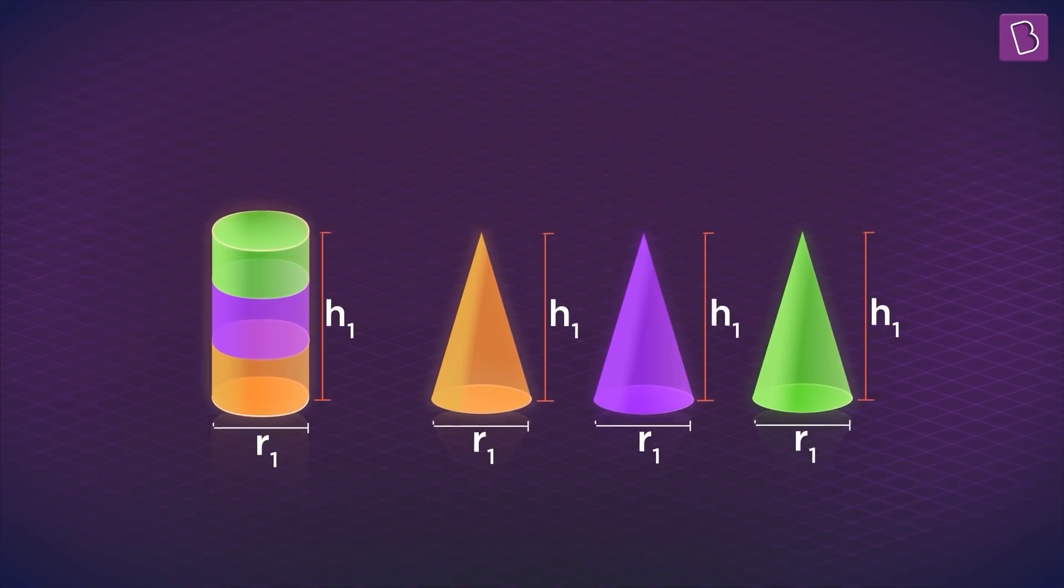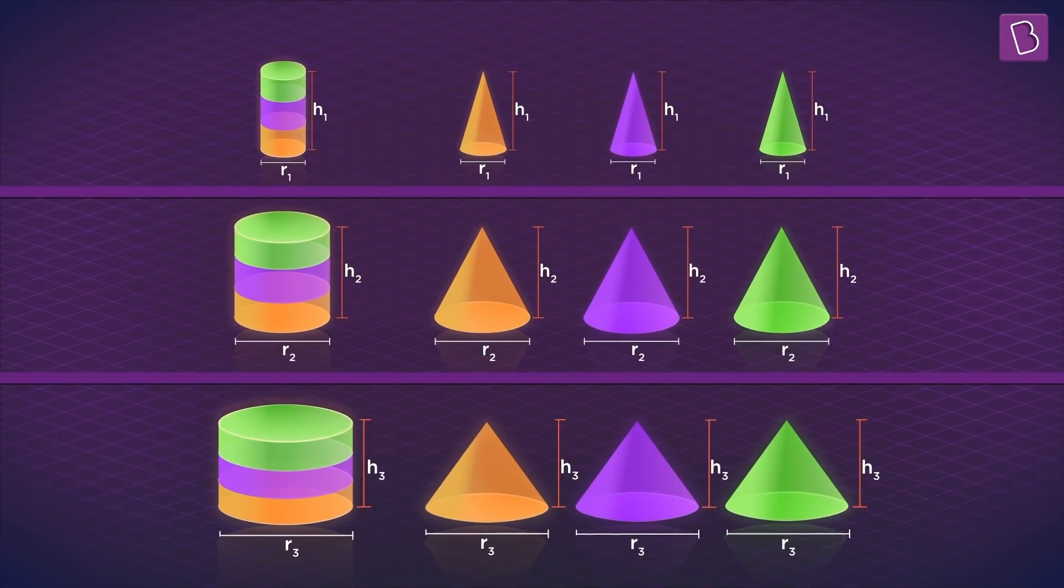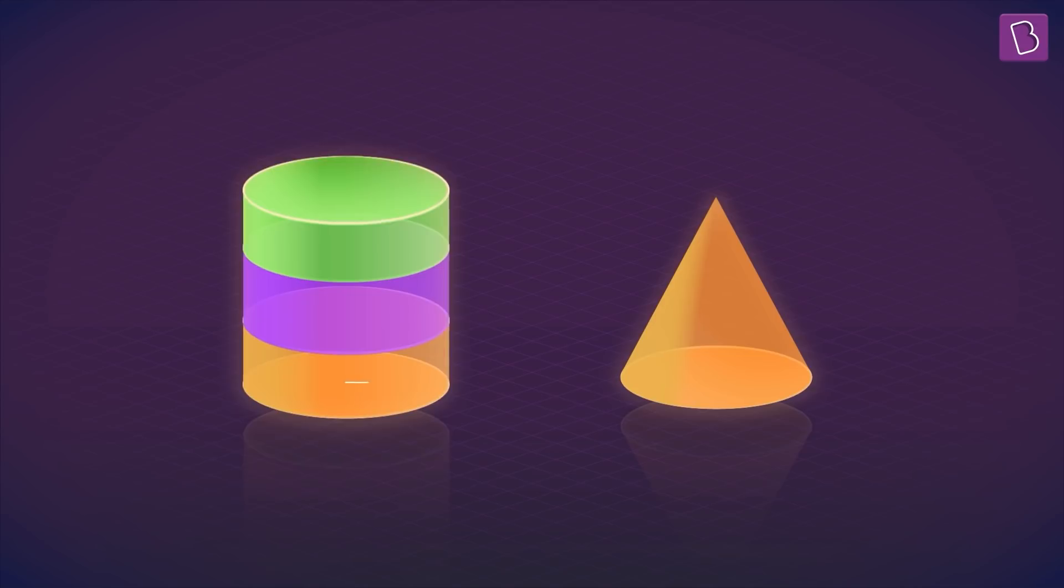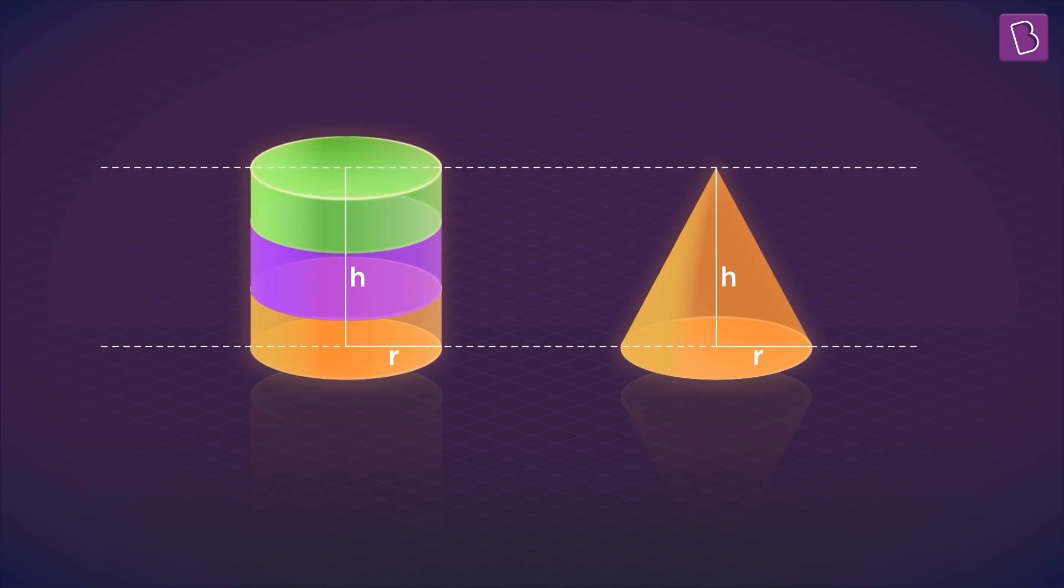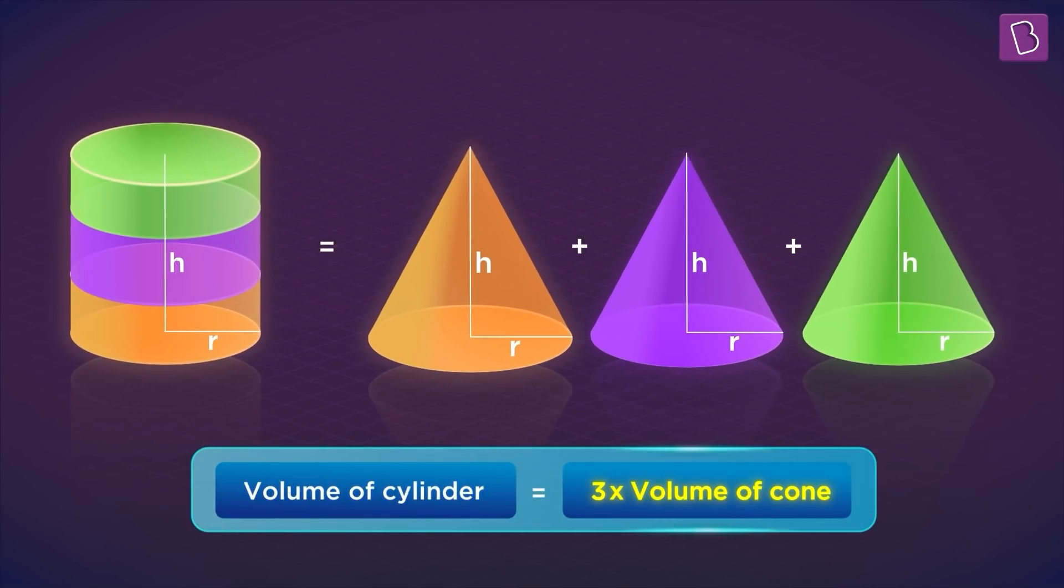And repeating the same process with tubs of different sizes will give you the same result. And do try this at home, by the way. But what does this show? It shows that if a cylinder and cone have the same base and identical heights, then the volume of the cylinder is three times the volume of a cone.